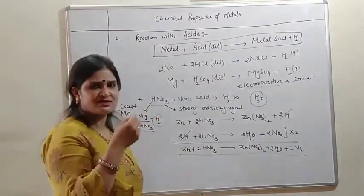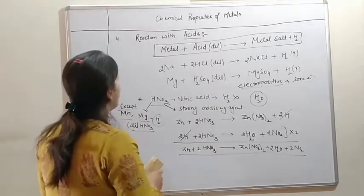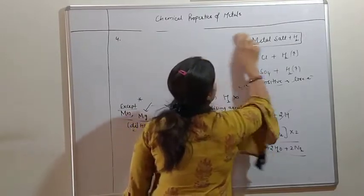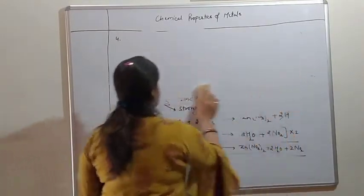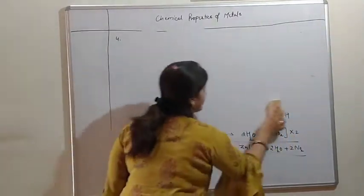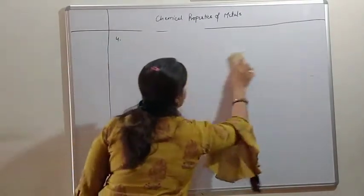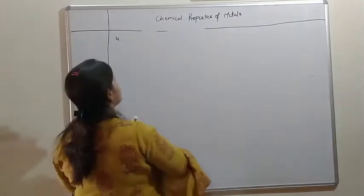A very short topic related to this is aqua regia. Have you heard the name aqua regia? It is a mixture, a solution, which is used to clean gold ornaments. Aqua regia is used to clean gold ornaments.